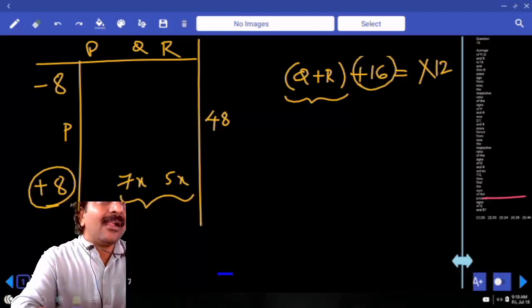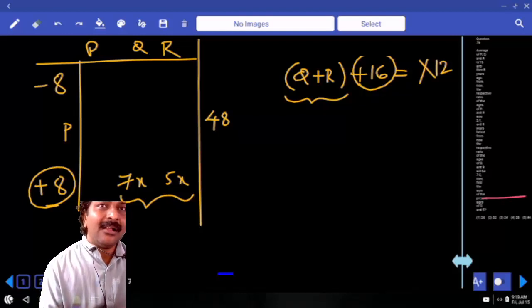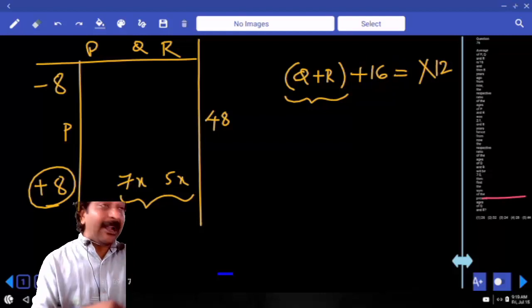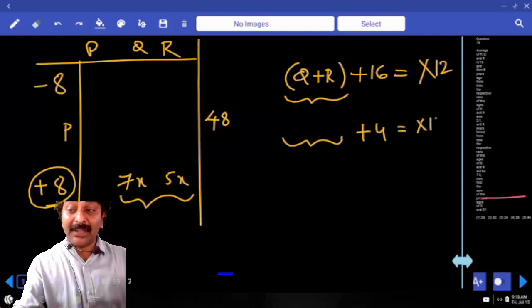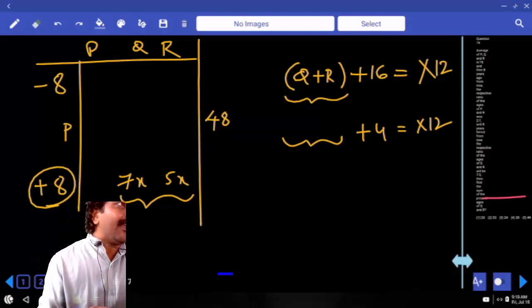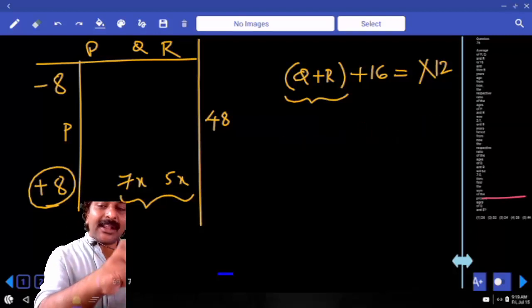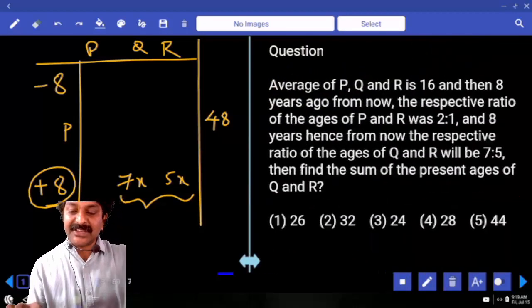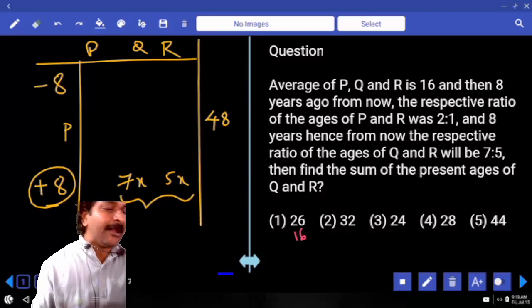16 added to what is 12 multiple? 4 added to what is 12 multiple? So from this you know that after adding 16 it has to be a multiple of 12. Add 16 and verify whether it is 12 multiple or not.